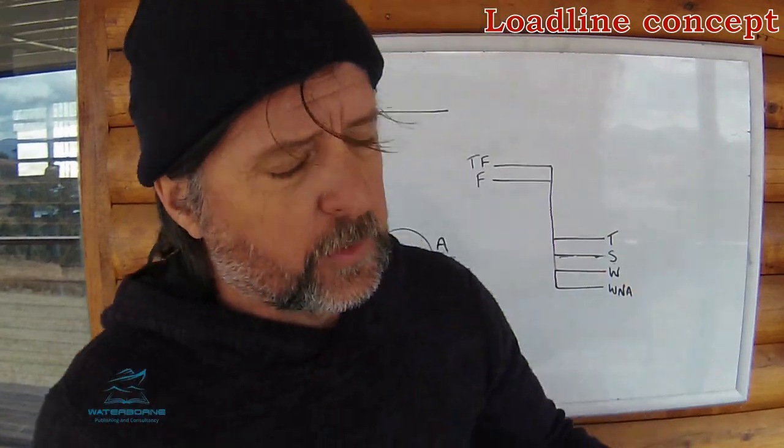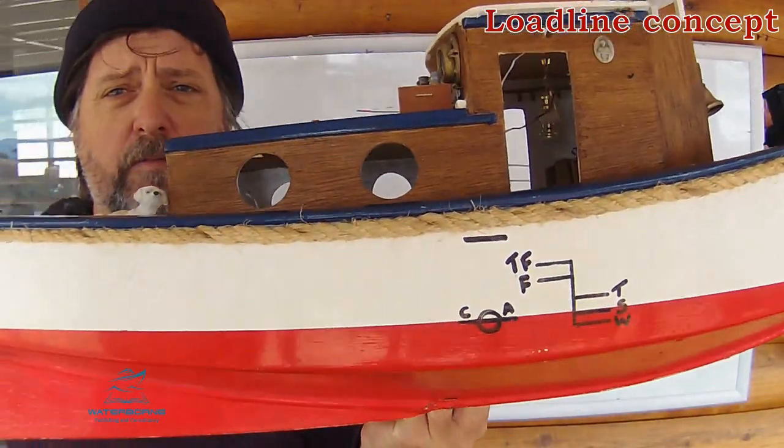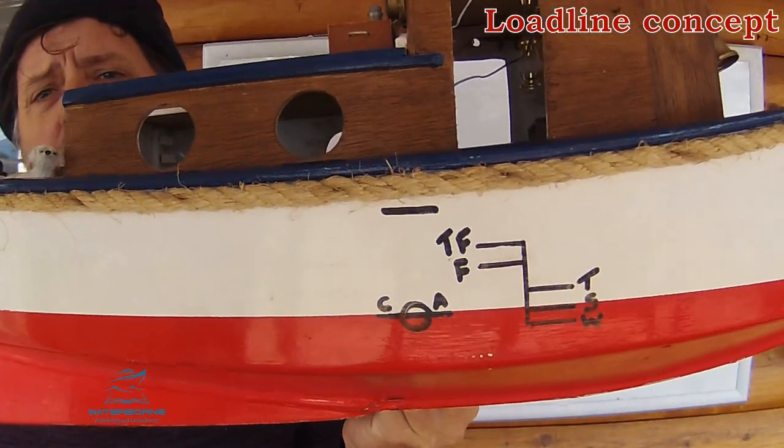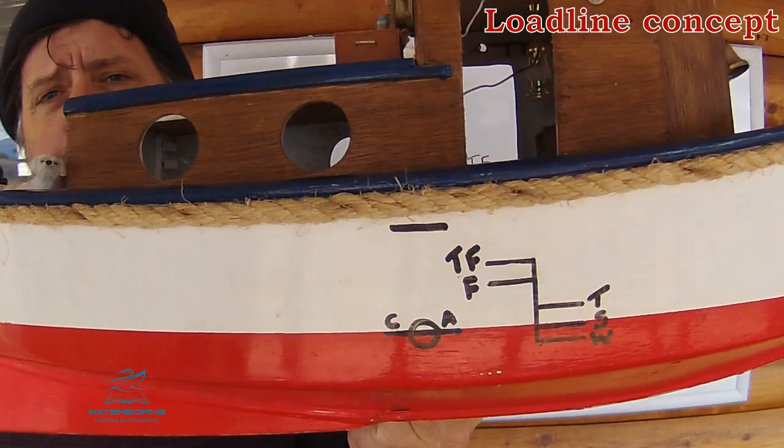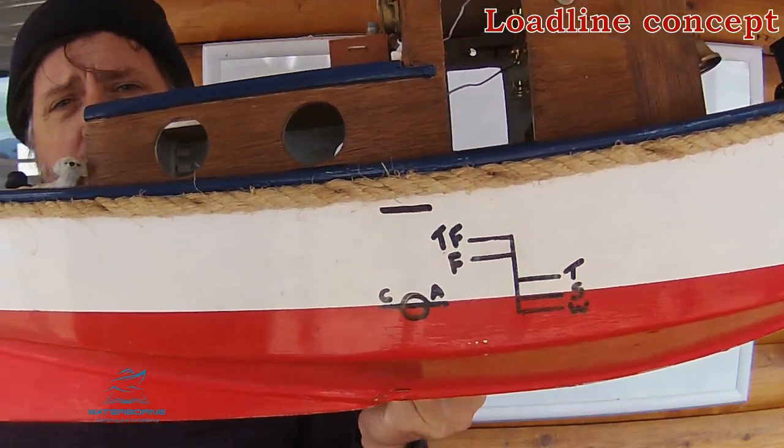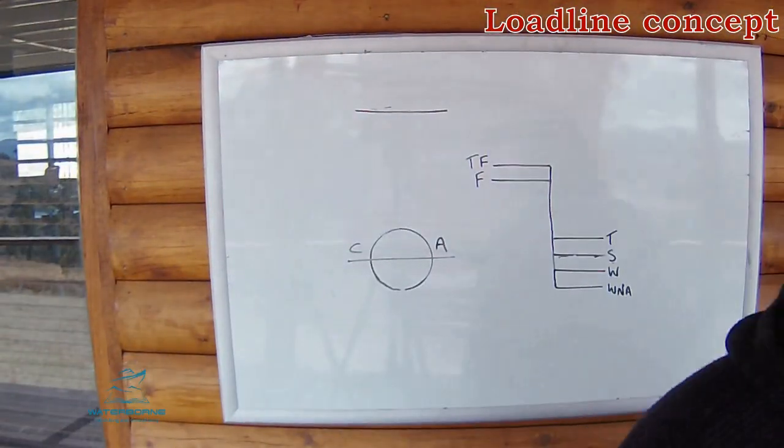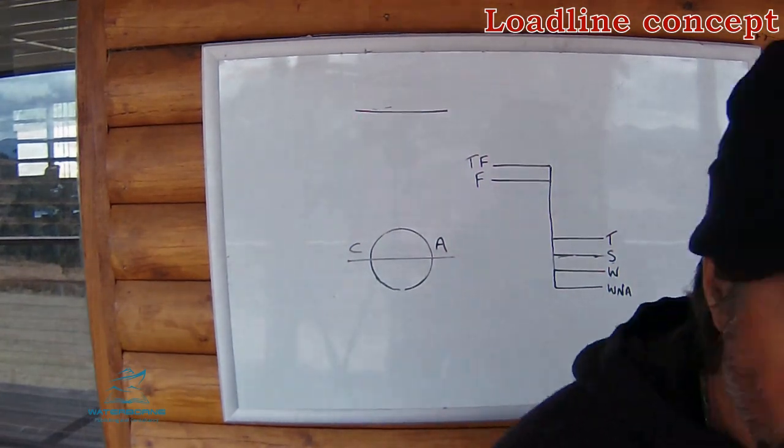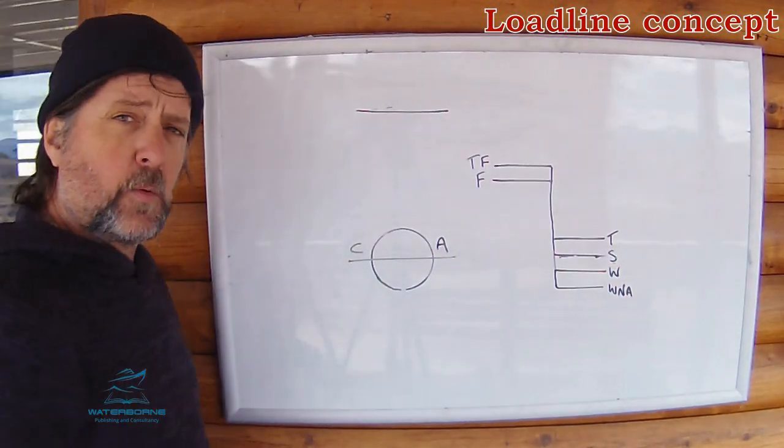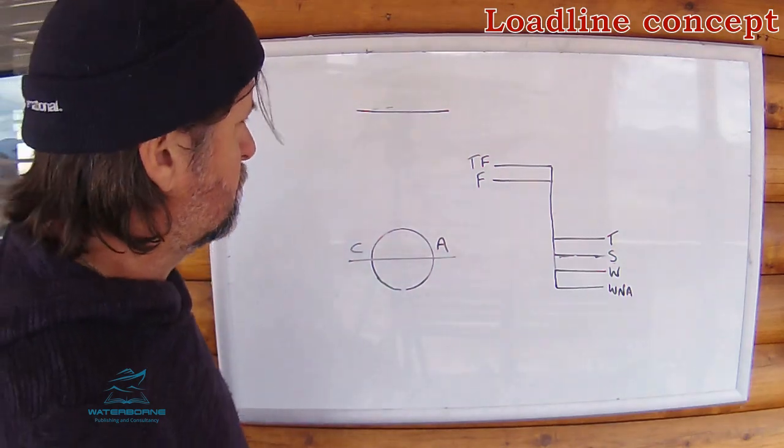A load line on a ship is commonly found near midships. If our little vessel here happened to have one, that's pretty much where you'd find it. As close as possible to midships. On either side of the vessel too, of course.